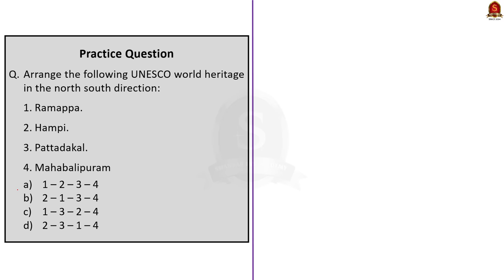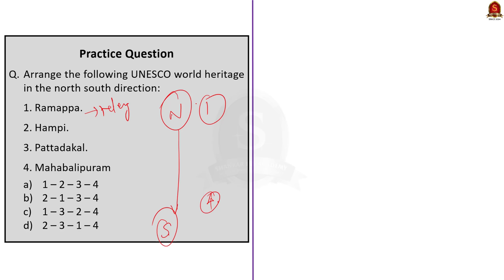The second question asks to arrange UNESCO World Heritage Sites from North to South: Ramappa, Hampi, Patadakkal, and Mahabalipuram. From common sense, Mahabalipuram is in the South. We know from our discussion that Ramappa lies in Telangana, so it will be in the North. Patadakkal is in the northern part of Karnataka and Hampi is in the south of Karnataka. So the order from North to South is 1 (Ramappa), 3 (Patadakkal), 2 (Hampi), 4 (Mahabalipuram). The correct option is option C.